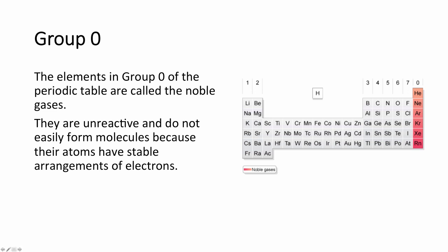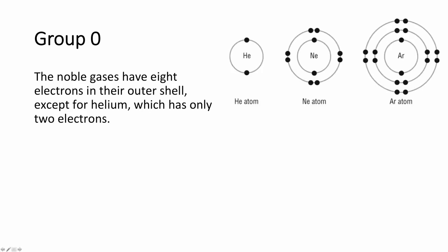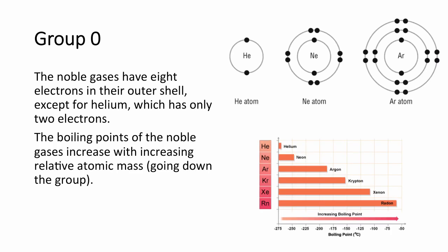Group 0 elements are called the noble gases. They are unreactive because they don't need to share electrons, as they already have a full outer shell. For example, helium has 2 electrons — the maximum for the first shell. Neon has 8, argon has 8. Therefore they don't need to share, take, or lose any electrons and don't need to react with anything. You also need to know that as you go down the group, the boiling point increases, but all noble gases are gases at room temperature — even radon is a gas at minus 55°C.